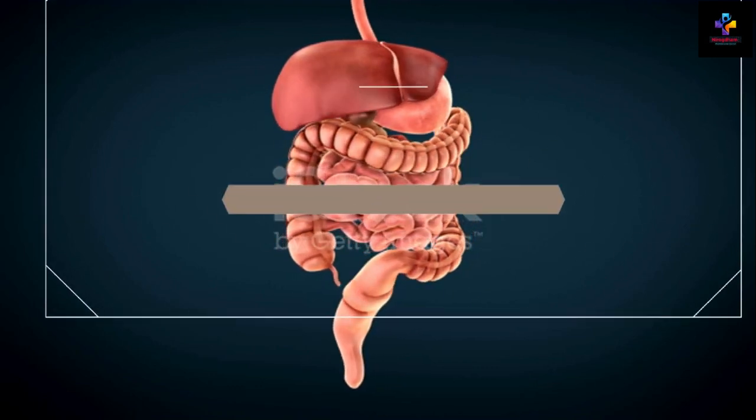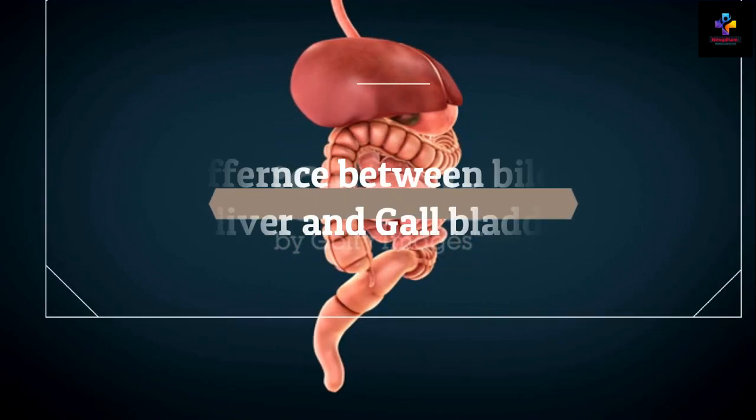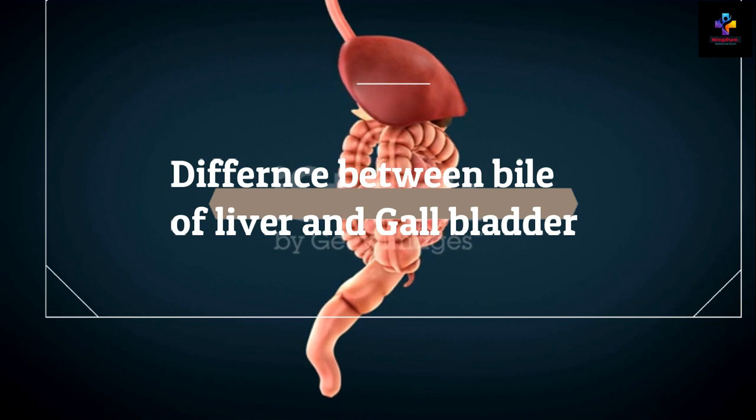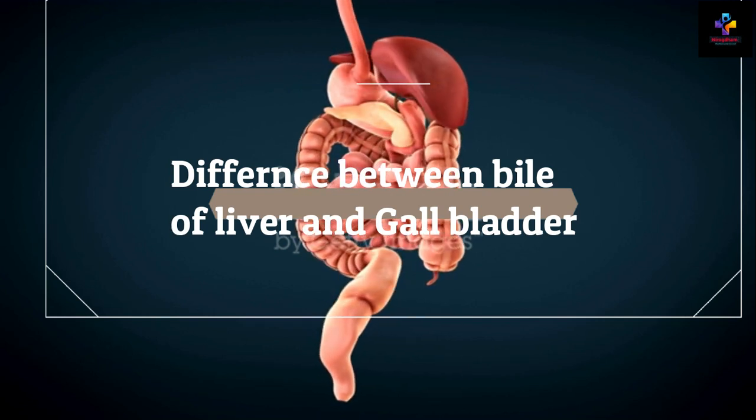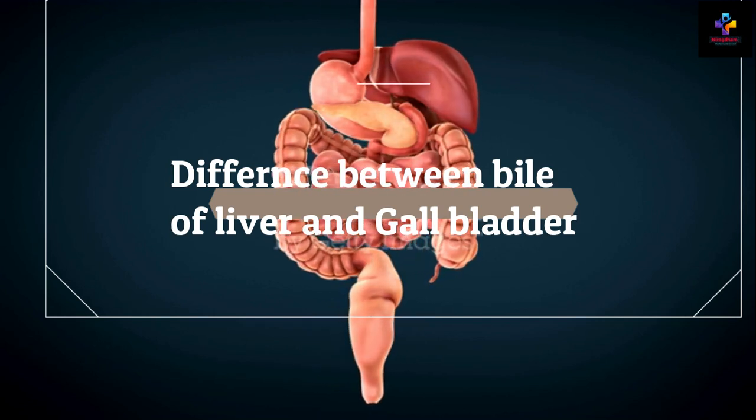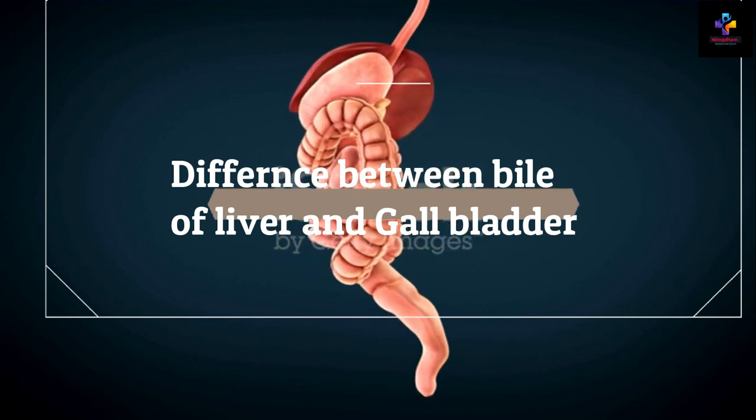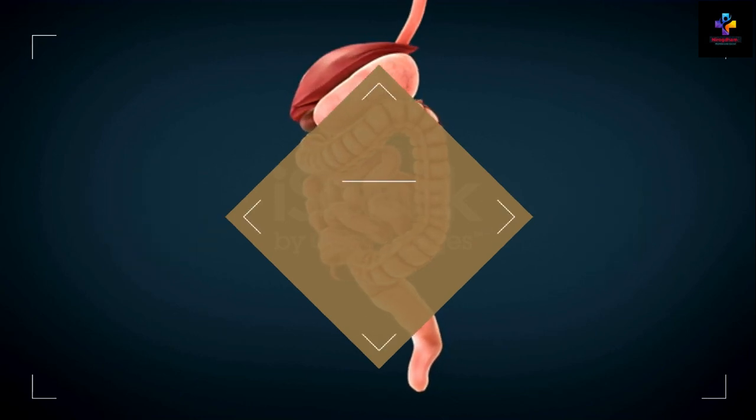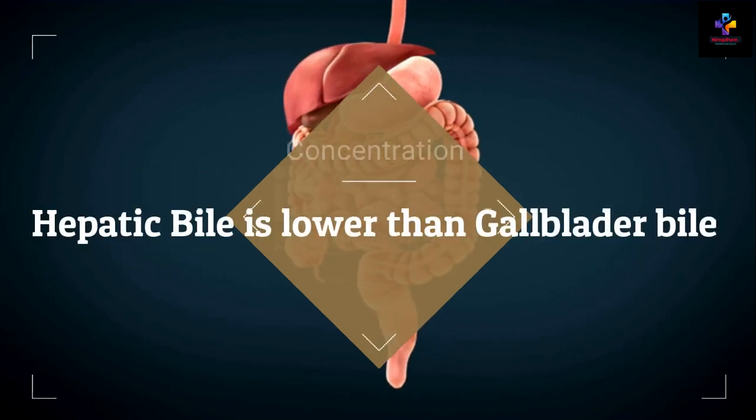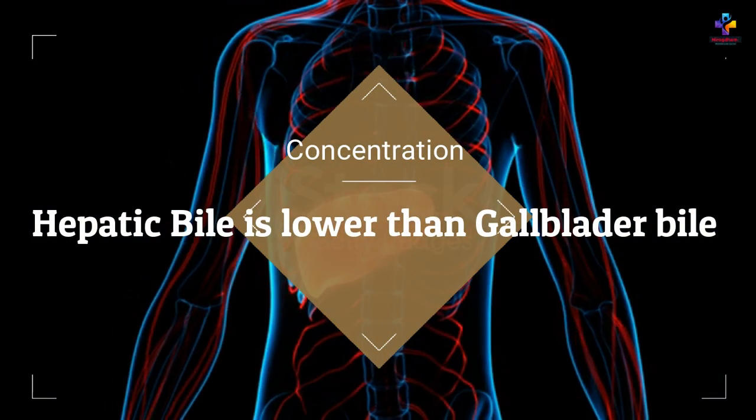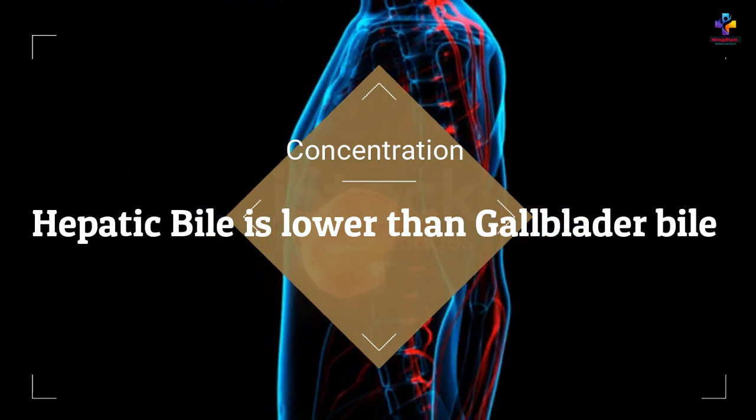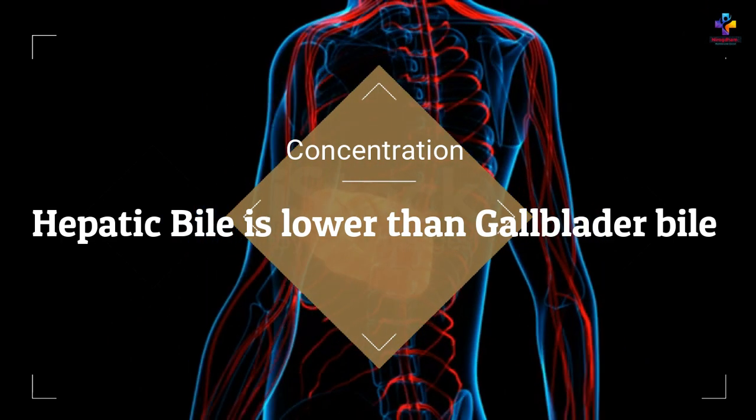The next question is related to bile. The difference between bile of gallbladder and the liver. The main difference between hepatic bile and gallbladder bile is that hepatic bile is the bile that the liver produces, whereas the gallbladder bile is the bile that gallbladder stores. So the concentration of hepatic bile is low while the concentration of the gallbladder bile is high.